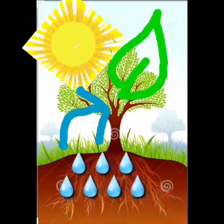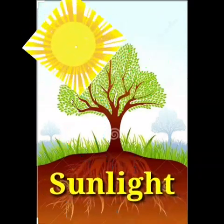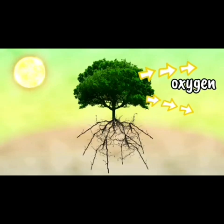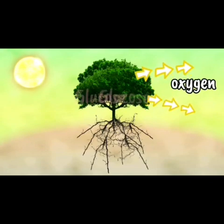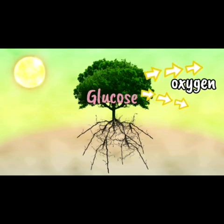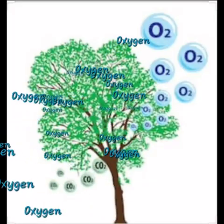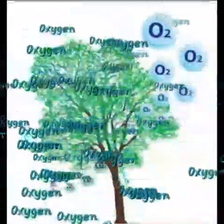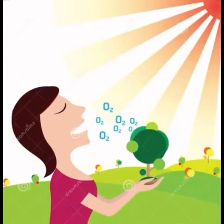Sunlight is absorbed by the green chemical in the leaves, which is called chlorophyll. During the process of photosynthesis, plants release oxygen and also form glucose. Plants are very important for us because they give us oxygen gas, which is essential for human beings to live.